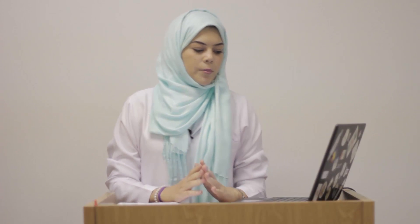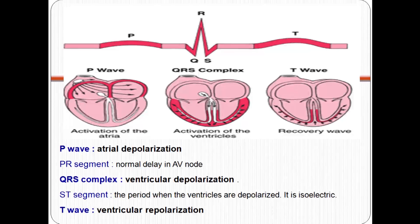The P wave is the atrial depolarization or the contraction of the atriums, and the PR segment is the normal delay in the AV node. Then the QRS complex, which is the ventricular depolarization or contraction of the ventricles, and the ST segment is the period when the ventricles are depolarized. Lastly, the T wave, which is the repolarization of the ventricles.